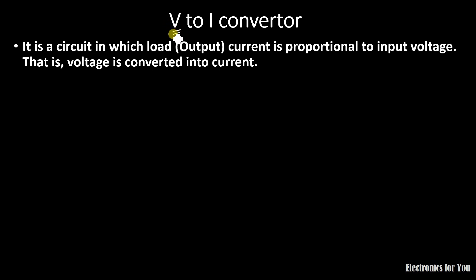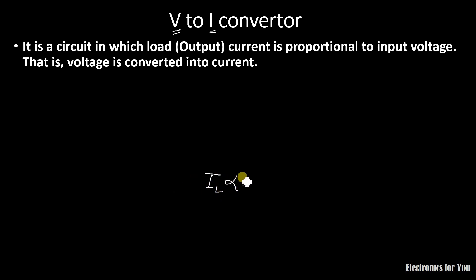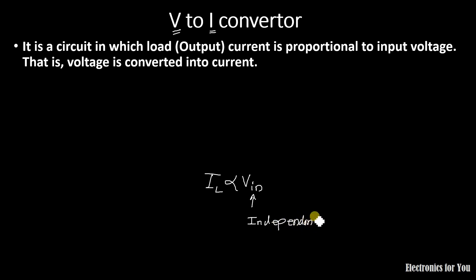Here V is our input and I is our output. It means that we are giving some voltage as an input and converting it into current. The load current IL is proportional to the input voltage VIN. VIN is the independent quantity and IL is the dependent quantity, so if VIN changes, IL will change.